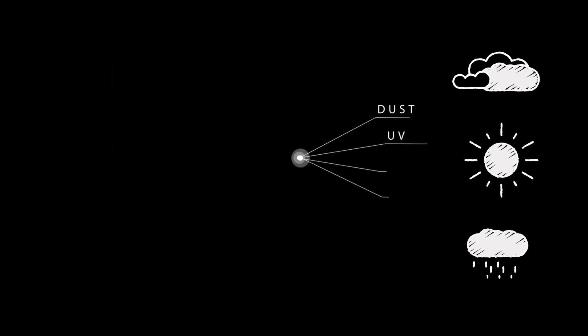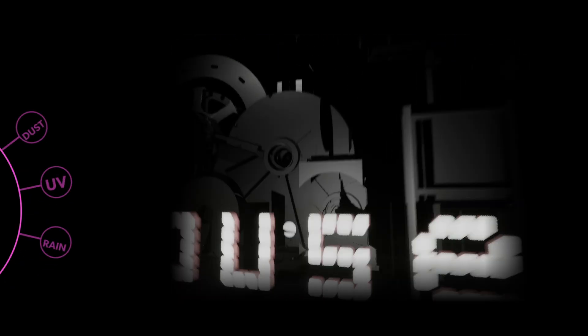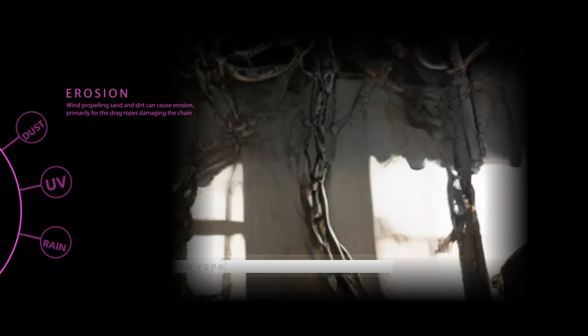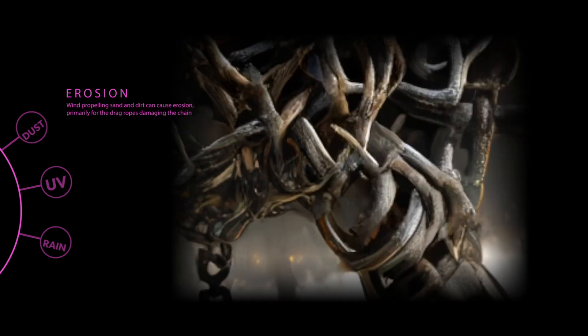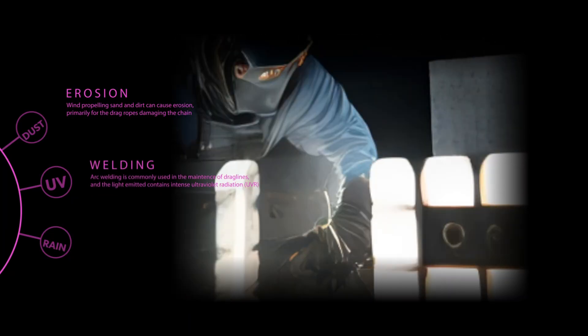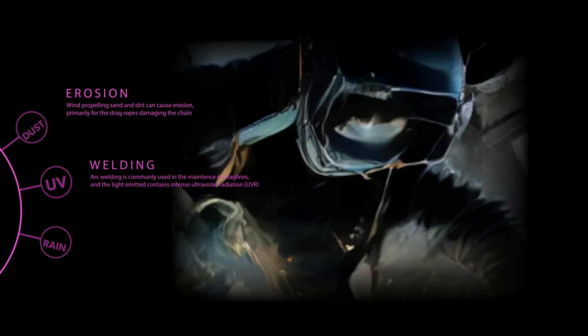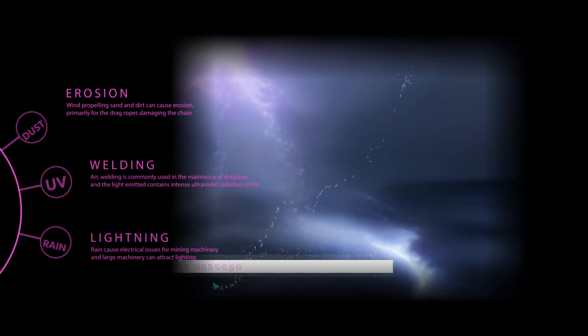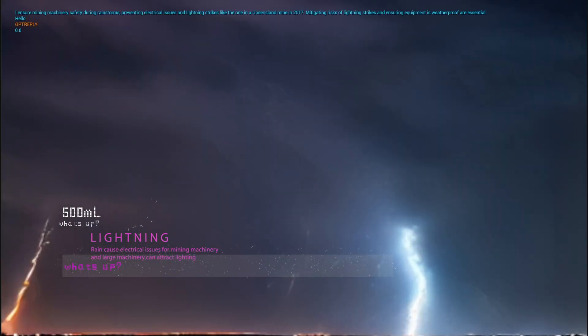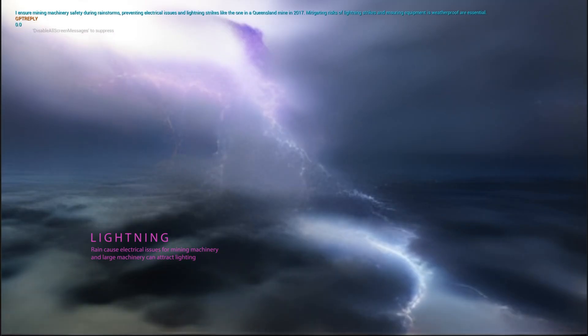I wanted to show the effect of each of these conditions on my AI characters. In the house, dust and wind can cause erosion, and prompting the AI will reveal this information. Drag ropes are frequently damaged by dust, leading to fraying and potential breakage. UV from welding can be harmful to workers — UV radiation emitted during welding requires UV-resistant materials and PPE for worker safety. Draglines can also attract lightning. I ensure mining machinery safety during rainstorms, preventing electrical issues and lightning strikes, like the one in a Queensland mine in 2017.